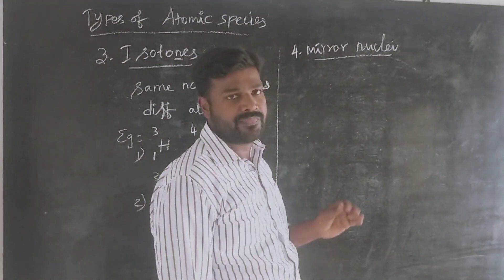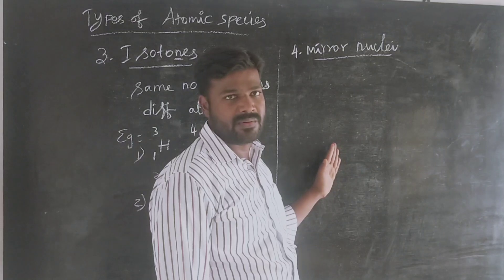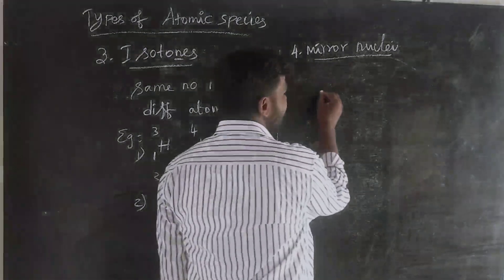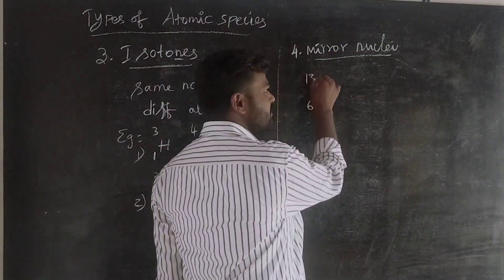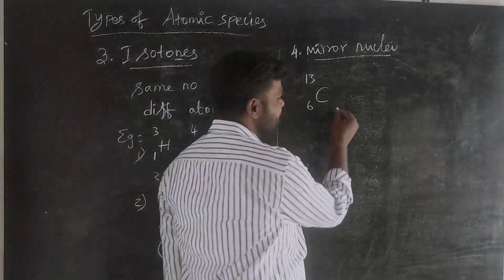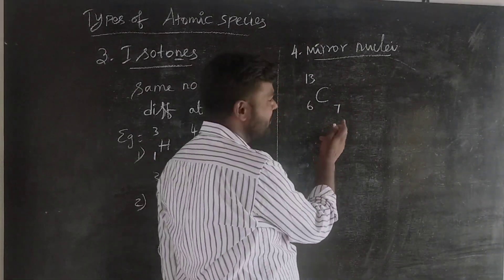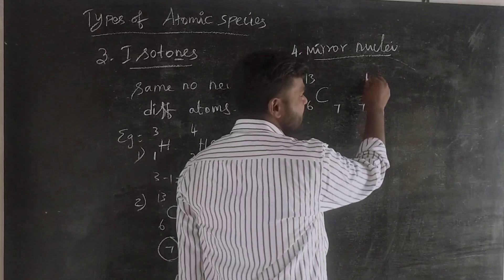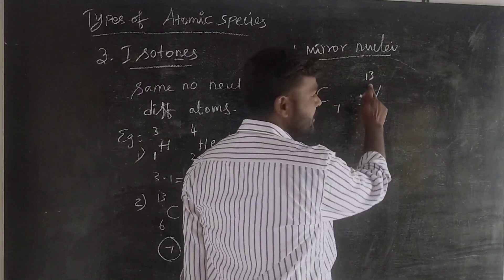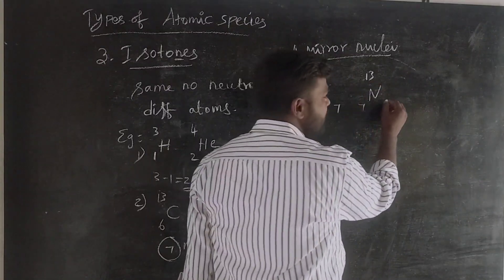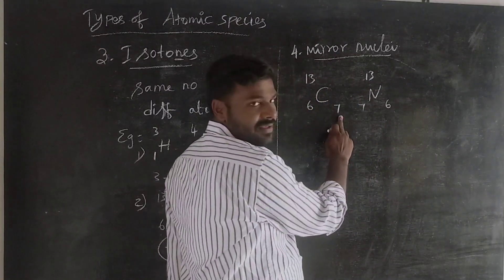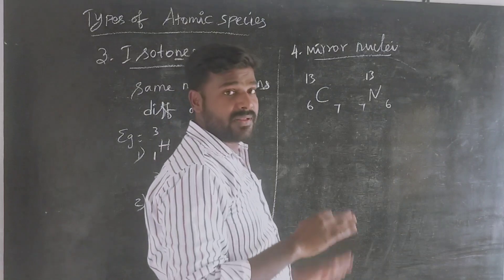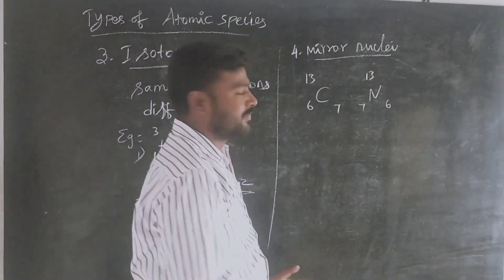Mirror nuclei are a special case where mass number is the same. For isobars, an example is carbon with atomic number 6 and mass number 13: 6 protons plus 7 neutrons equals 13, so nitrogen is the isobar. Hydrogen-1 (protium), tritium, and helium-3 are also discussed as isotone examples.